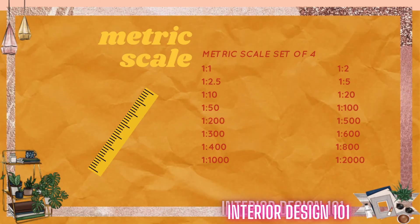Metric scale is a set of 4 scales, involving millimeters and centimeters. 1 is to 1 scale is a normal centimeter scale — it is a full size scale. Then 1 is to 2: it is half, meaning 1 cm full size becomes 2 cm at this scale.